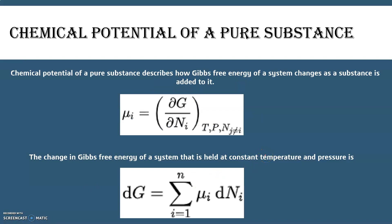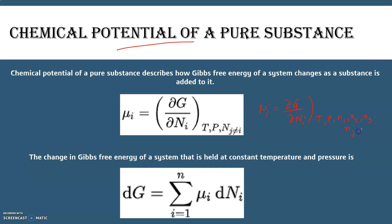We have already discussed the chemical potential of a pure substance, which is given by the change in Gibbs free energy with respect to the amount present: μᵢ = (∂G/∂nᵢ) at constant temperature, pressure, and all nⱼ where j ≠ i. This is how we define chemical potential for a pure substance, covered in our previous lecture.